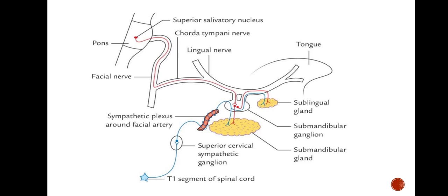The pre-ganglionic sympathetic fibers arise from the T1 segment of the spinal cord and relay in the superior cervical sympathetic ganglion, from where the post-ganglionic fibers arise. These form a sympathetic plexus around the facial artery, and this plexus passes through the sub-mandibular ganglion and gives its branches to the sublingual and sub-mandibular gland.